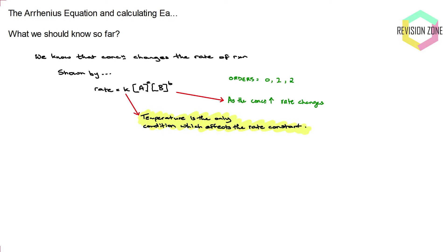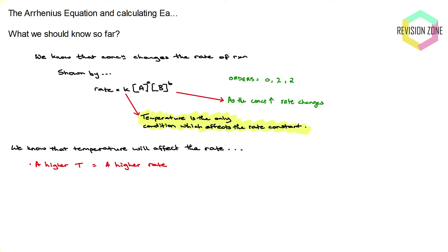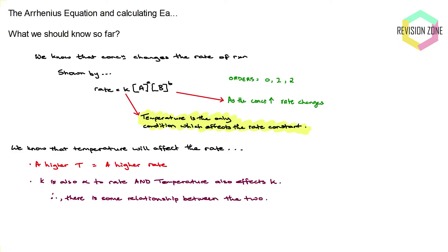So at a particular temperature K is constant, but increasing temperature increases K. Temperature affects the rate, a higher temperature means a higher rate, and K is also proportional to the rate. There is a relationship between temperature and rate, temperature and rate constant, and rate constant and rate. The relationship between temperature and activation energy is an exponential relationship, and we can use the rate constant to help determine what that relationship is.